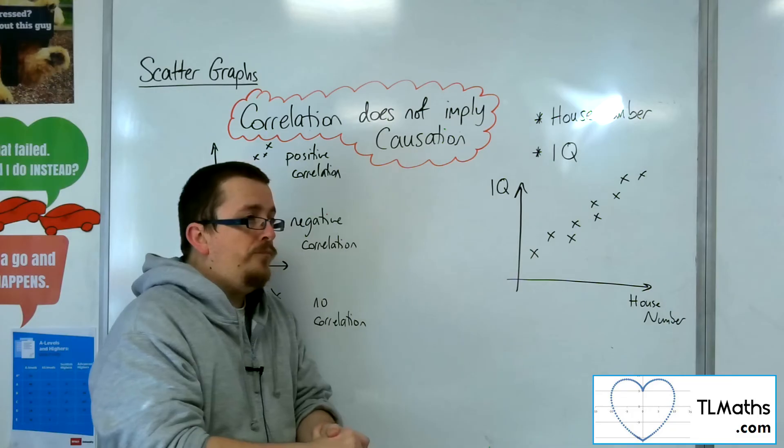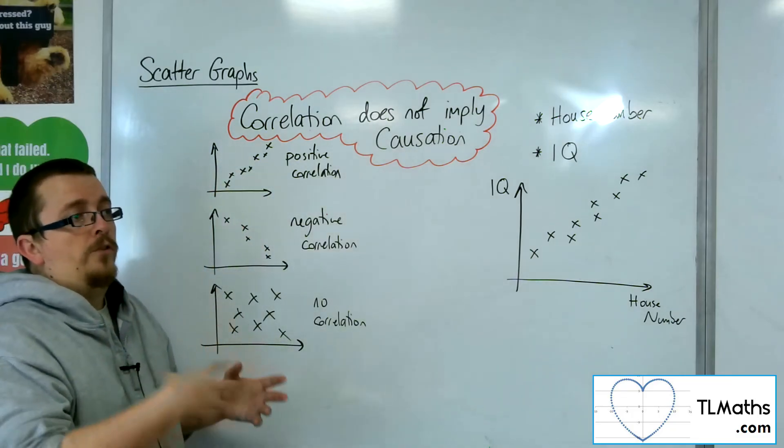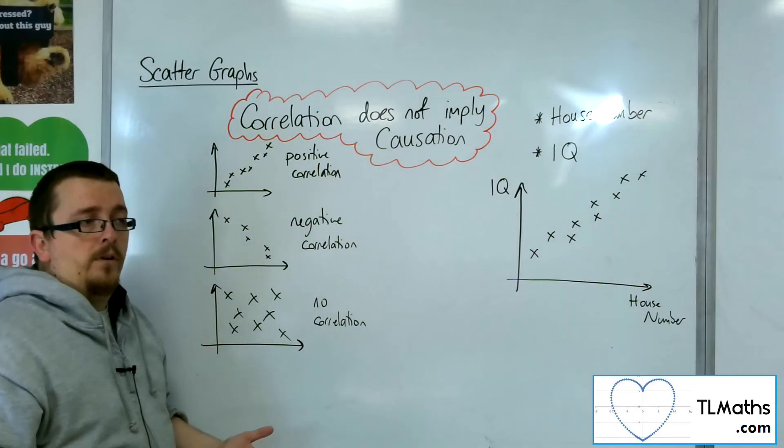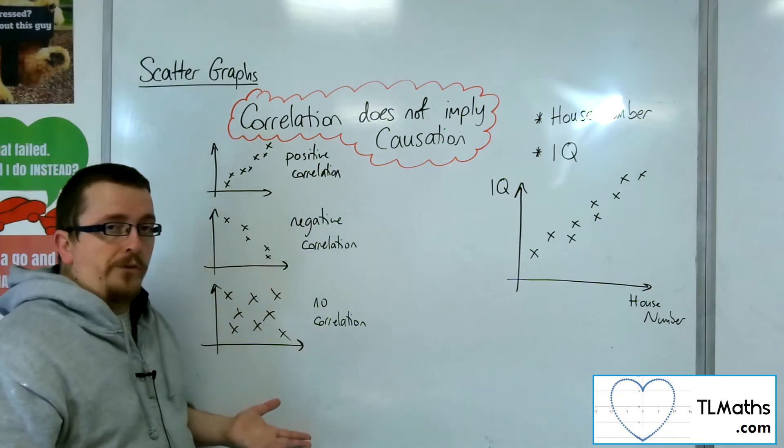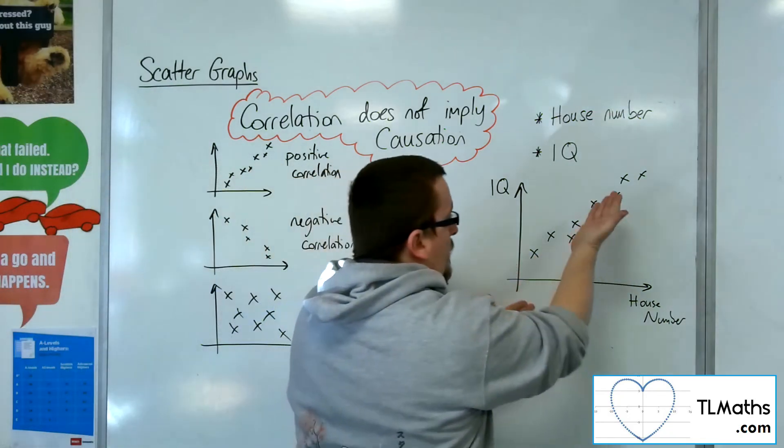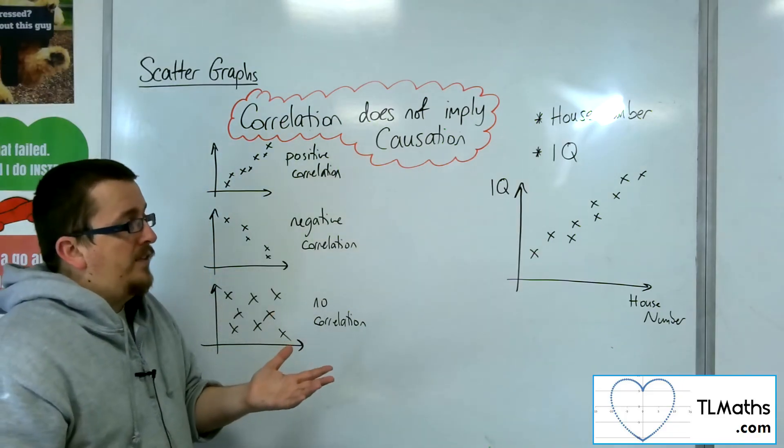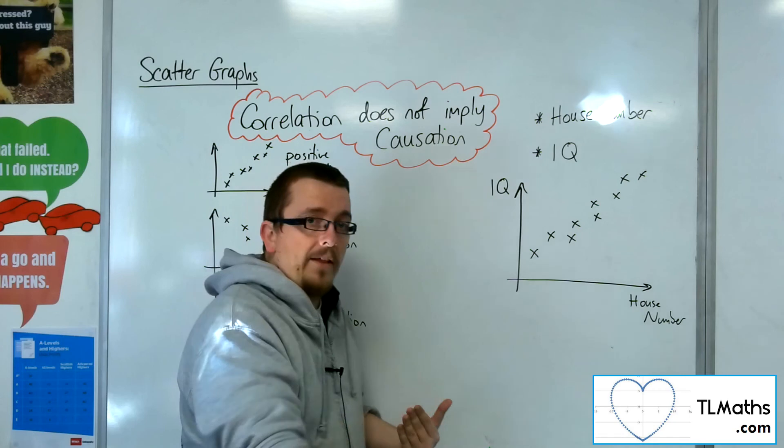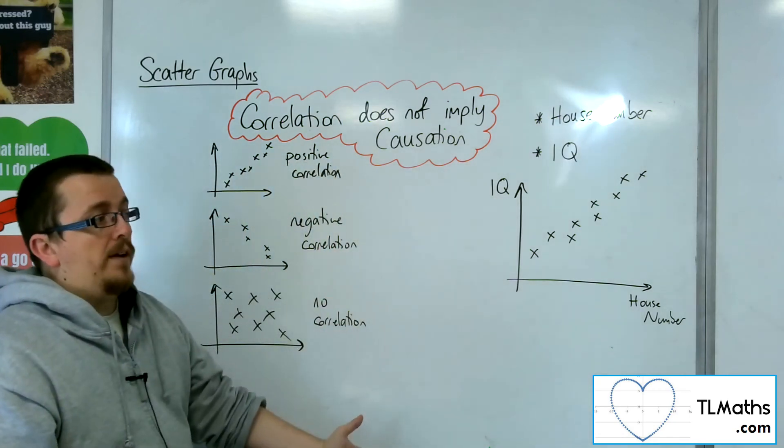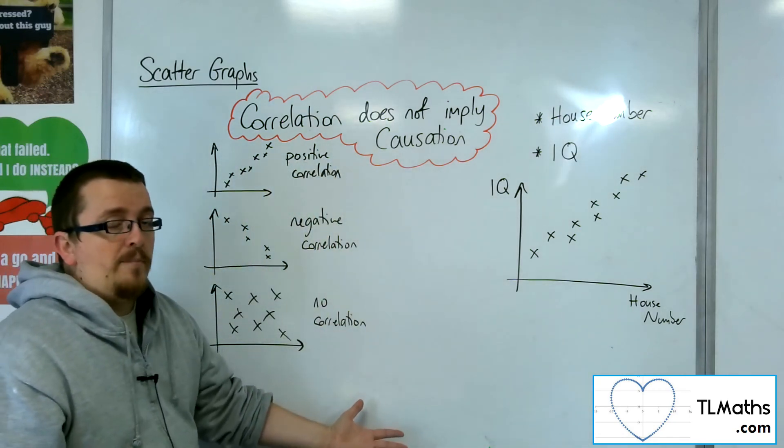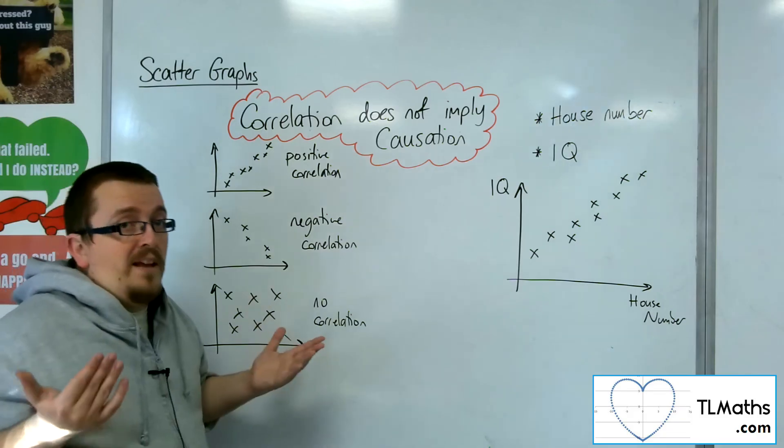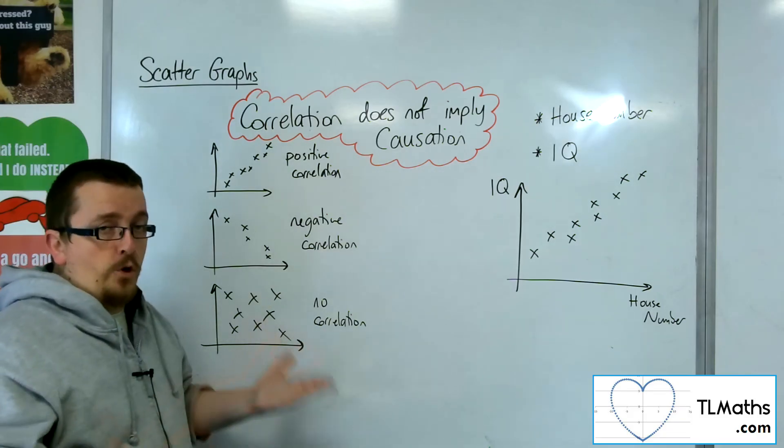For example, if you had scores on two different maths tests and you plotted the results and found they looked like this, then you would probably expect that if somebody did better on one maths test, they would do better on the other. And that stands to reason, that makes sense, and so you would probably expect there to be some causation.